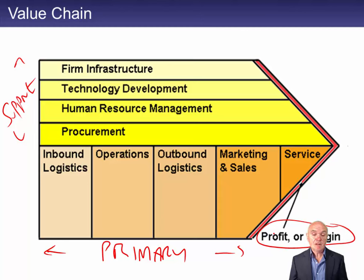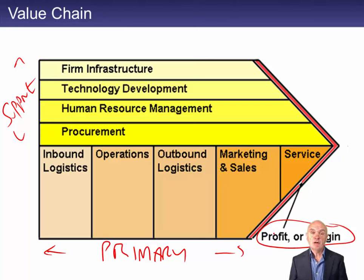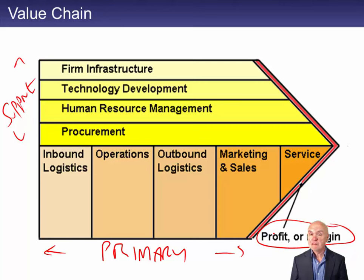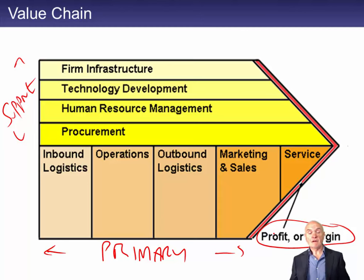Firm infrastructure includes things like head office and the accounting department — and there are choices, such as whether to handle your receivables ledger yourself or go to a factor. Technology development is basically research and development. Human resources management covers recruitment, retention, training, motivation, and appraisal. Porter also splits out procurement — the placing of orders for goods and non-current assets — from inbound logistics. Again there are choices: one supplier with a negotiated discount, or multiple suppliers played off against each other.